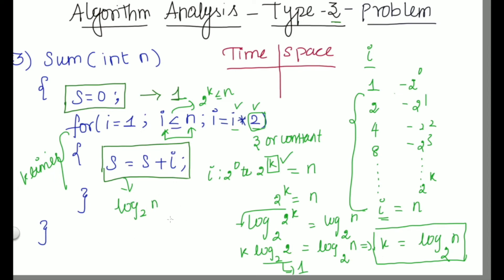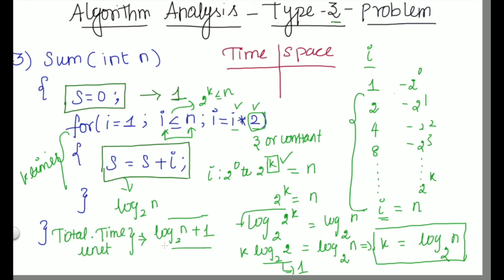The total time unit is log(n) base 2 plus 1 for the declaration statement. In a priori analysis we consider only the higher order terms, so the time complexity for this problem is O(log n base 2).